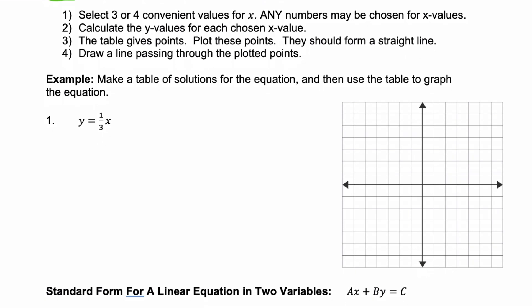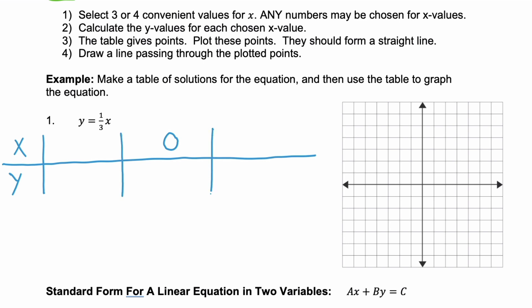Let's go through that whole process with y equals one-third x. We're going to make a table, and when we make our table, we want to pick convenient values for x. The most convenient value is always zero. I'll also pick a negative value and a positive value. Since we have the fraction one-third, we want to multiply by three or a multiple of three to eliminate the fraction. So our convenient values are negative 3, 0, and positive 3.